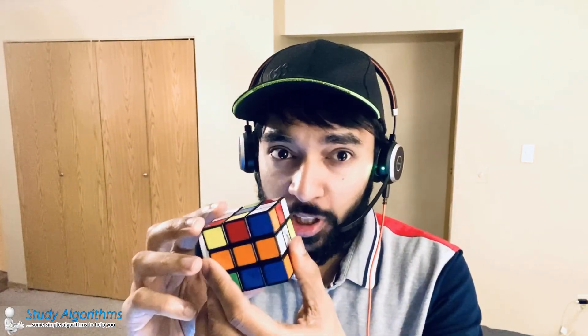You cannot even start to think how many total number of combinations are possible. This, for instance, is one combination. If I rotate it in this way, this is another combination. I rotate it another, this is again another combination. In fact, any combination you try, there is a very slight chance that you would be repeating one of your choices. And this Rubik's cube has a total of 43 quintillion total combinations. That's like 43 followed by 18 zeros.